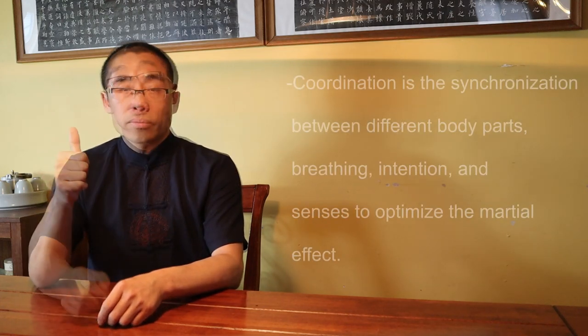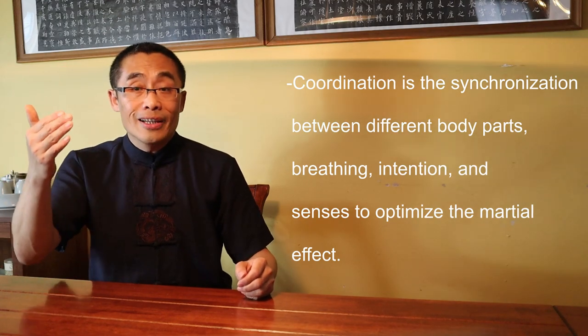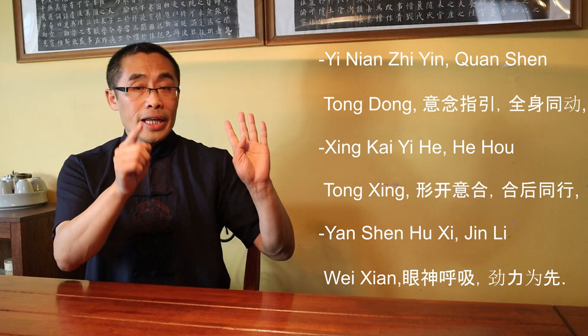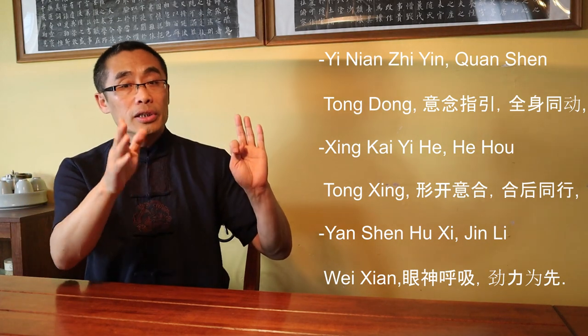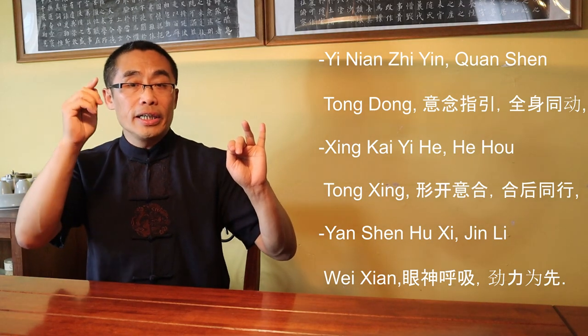Before we go into details, let me first define the term coordination in the martial context. Coordination is the synchronization between different body parts, breathing, intention, and senses to optimize the martial effect. After years of teaching, I created 6 sentences in 3 pairs, or 3 proverbs. In Mandarin: Yi Nian Zhe Yan, Quan Shen Tong Dong, Xing Kai Yi He, He Hou Tong Xing, Yan Shen Hu Xi, Jin Li Wei Xian.